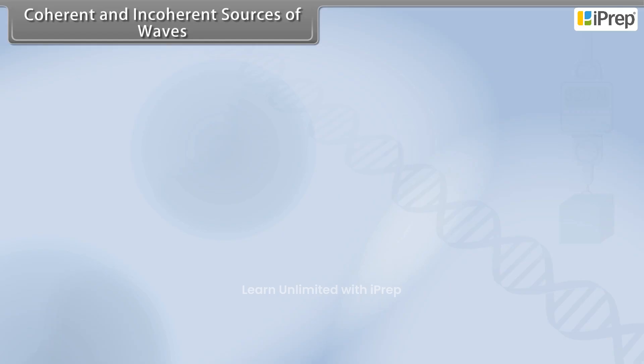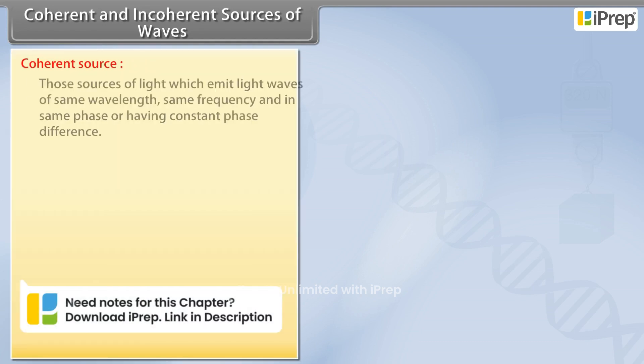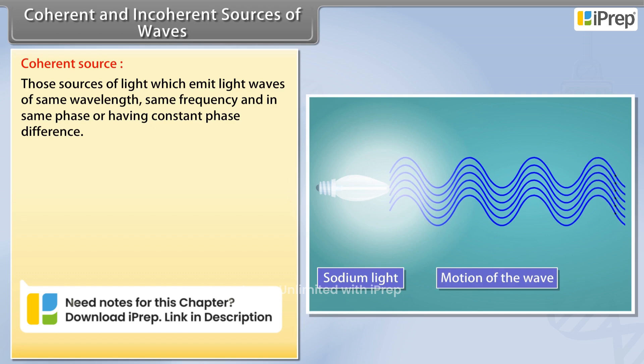Coherent and incoherent sources of waves. Coherent sources of light are those sources of light which emit light waves of same wavelength, same frequency, and in same phase or having constant phase difference.